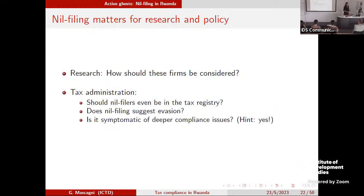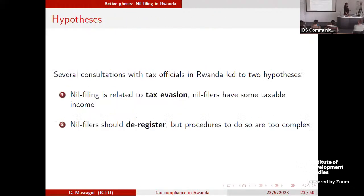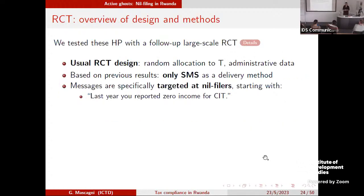We asked our Rwanda Revenue Authority colleagues why this was happening. They gave us two hypotheses. One: nil filers are tax evaders — they declare zero but should declare something. Two: nil filers are registered but should deregister, and they don't because the deregistration process is so complex they'd rather keep filing zero than go through the steps to deregister. We had two testable hypotheses, so we ran the second RCT to see if they were confirmed in the data.